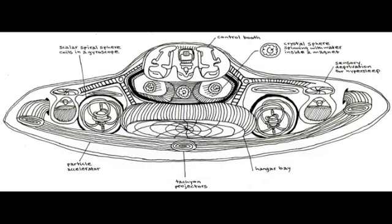First, we see the full exploded diagram showing the relationship from the side of all the systems in the disk craft. From upper left clockwise to lower left: scalar, spiral, sphere, coils in a gyroscope (the propulsion system), control booth, the ship's cabin, crystal sphere spinning with water inside a magnet (the navigation system), sensory deprivation for hypersleep (the sleep chambers or personal quarters), hangar bay for entering and exiting the craft, particle accelerator (the braking system).